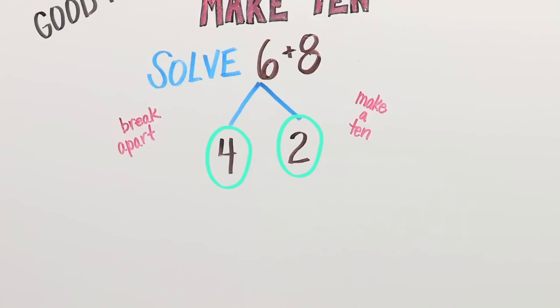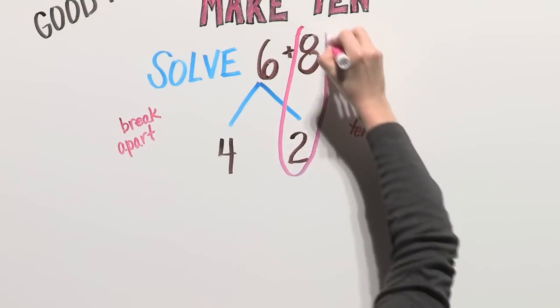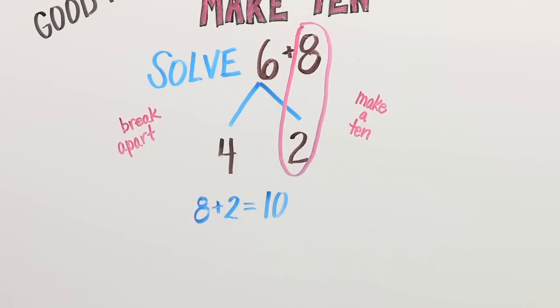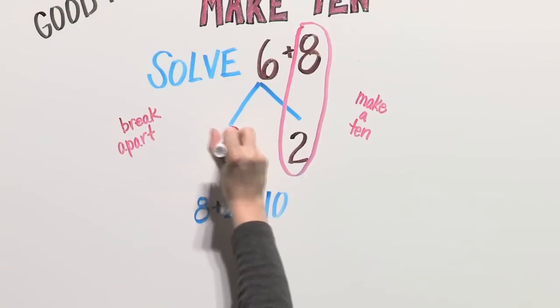And look, we broke apart six. Now, if eight plus two equals ten, we can easily add with a ten.